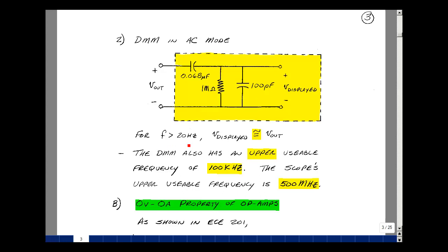Now if our frequency is greater than about 20 hertz, this capacitor, which was larger than our oscilloscope case, looks like a short circuit. And so the displayed voltage is roughly what we're measuring. We call it V_out.